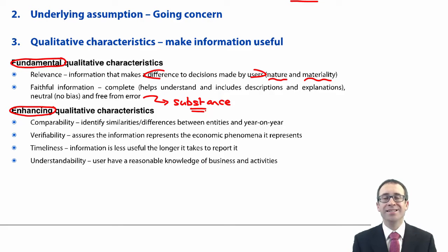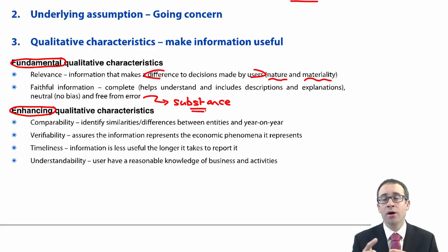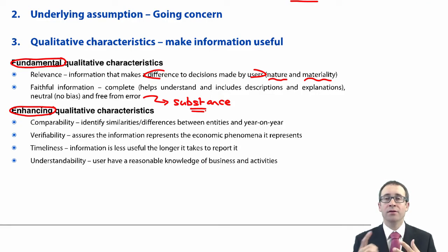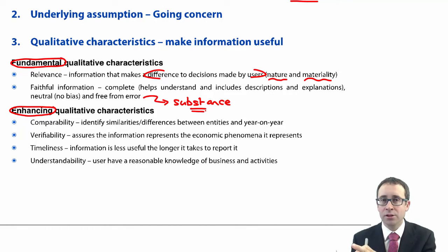And then those enhancing qualitative characteristics — comparability, verifiability, timeliness and understandability — we've seen those all before. So comparability is not just thinking about year on year, we're also thinking about entity on entity in order to help the users of the accounts. We want to make sure that they can make a decision based upon what happened last year and this year, but also what one business has done compared to what another business has done.